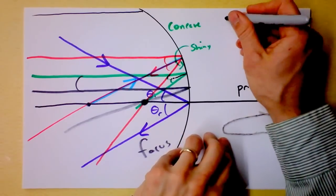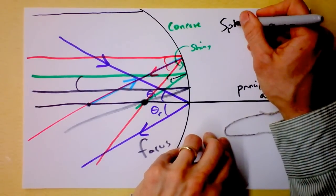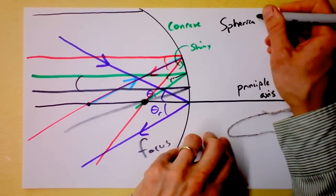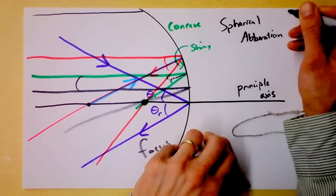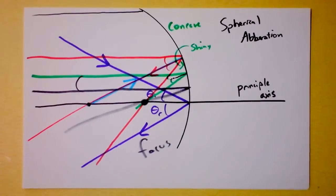They're easy to make, but you get what's called spherical aberration. And nobody likes aberrations, in particular not spherical aberrations.